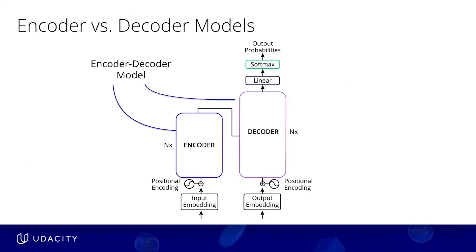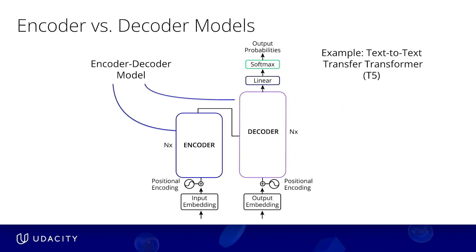The transformer model is composed of multiple layers of the encoding and decoding blocks you see here. Models that adopt the original architecture of the transformer are called encoder-decoder models. One such well-known example is T5, short for the text-to-text transfer transformer.